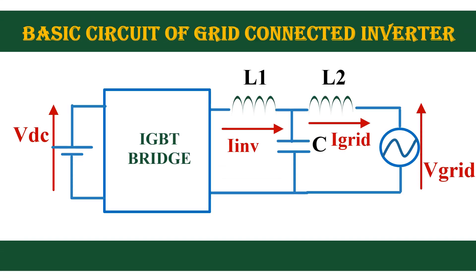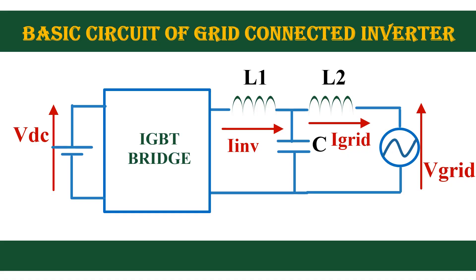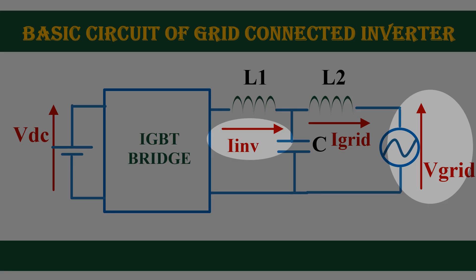This is the basic schematic of single phase grid connected inverter. It consists of DC voltage input, IGBT, grid circuit, LCL filter, and the grid. For the implementation of the controller, we need to sense grid voltage and grid current or inverter current.